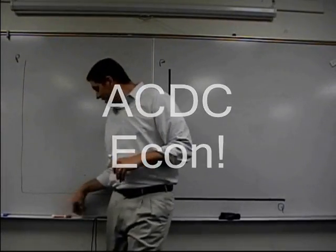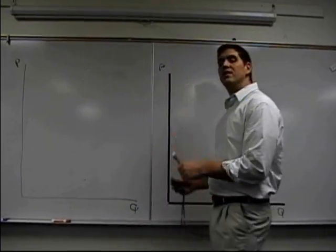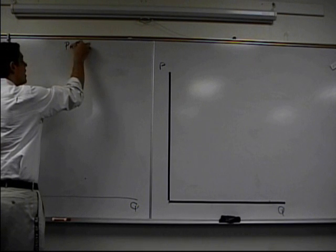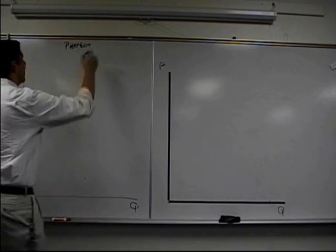Hey, how are you doing? This is Mr. Clifford with ACVC Econ, Key Econ Concepts in 60 Seconds. We're talking today about perfect competition. Perfect competition is one of the four market structures. Hopefully you already understand the characteristics of perfect competition.